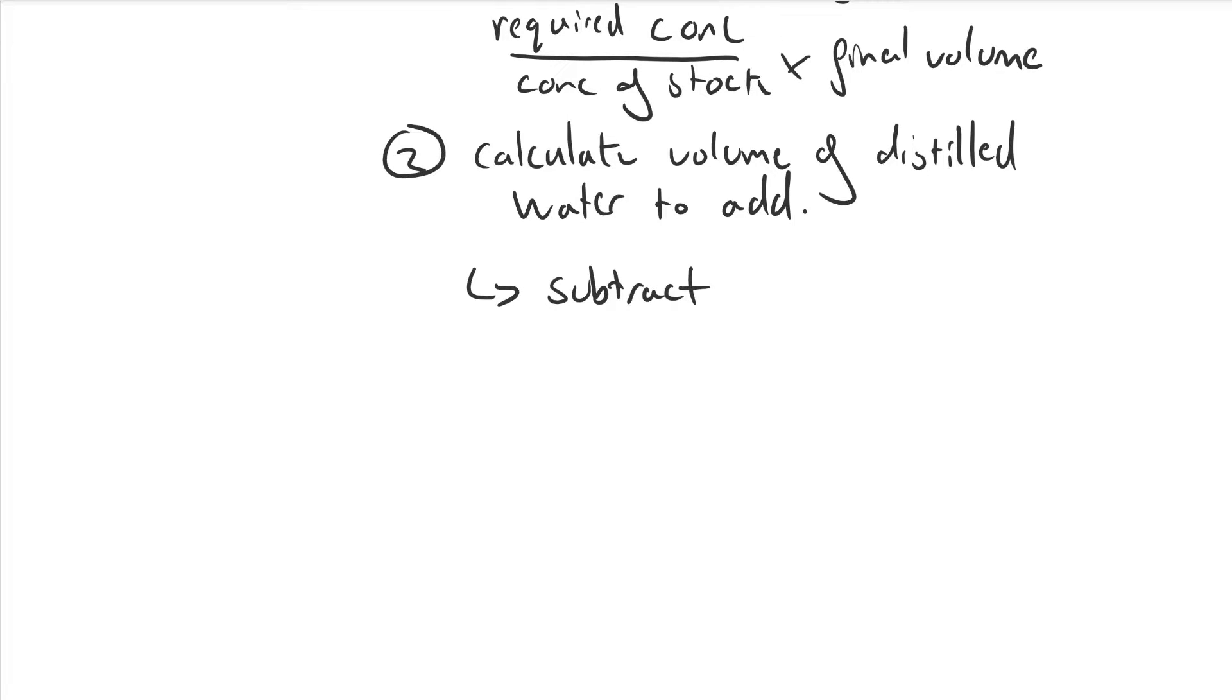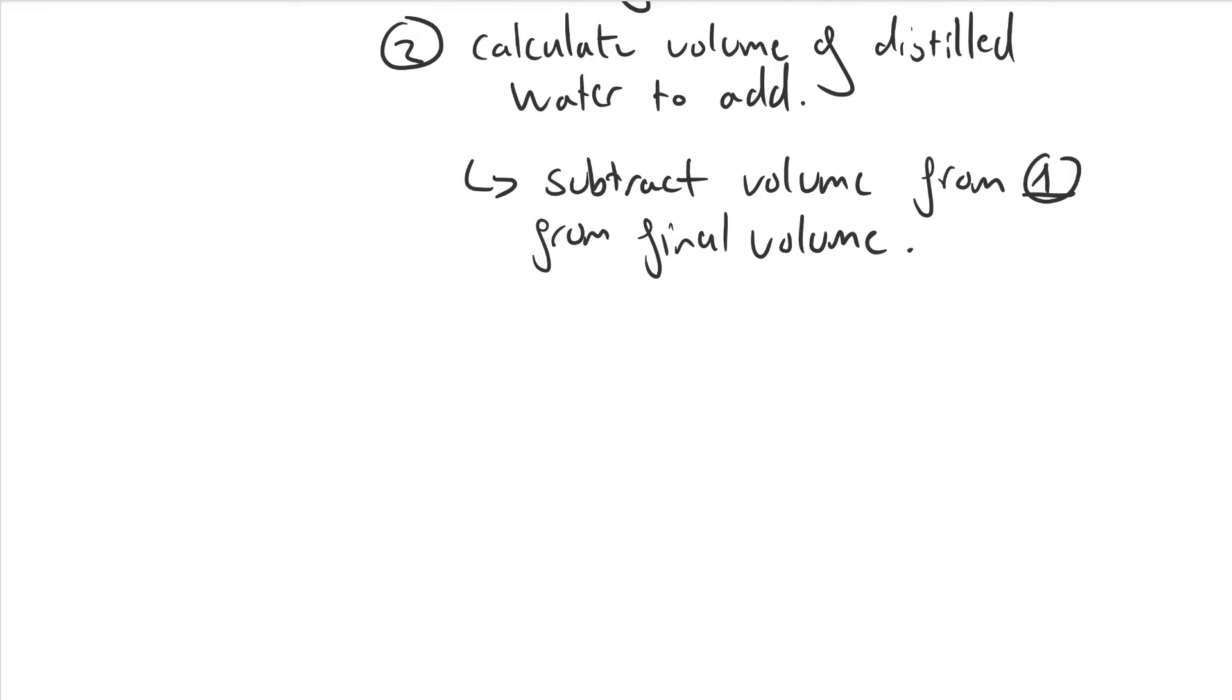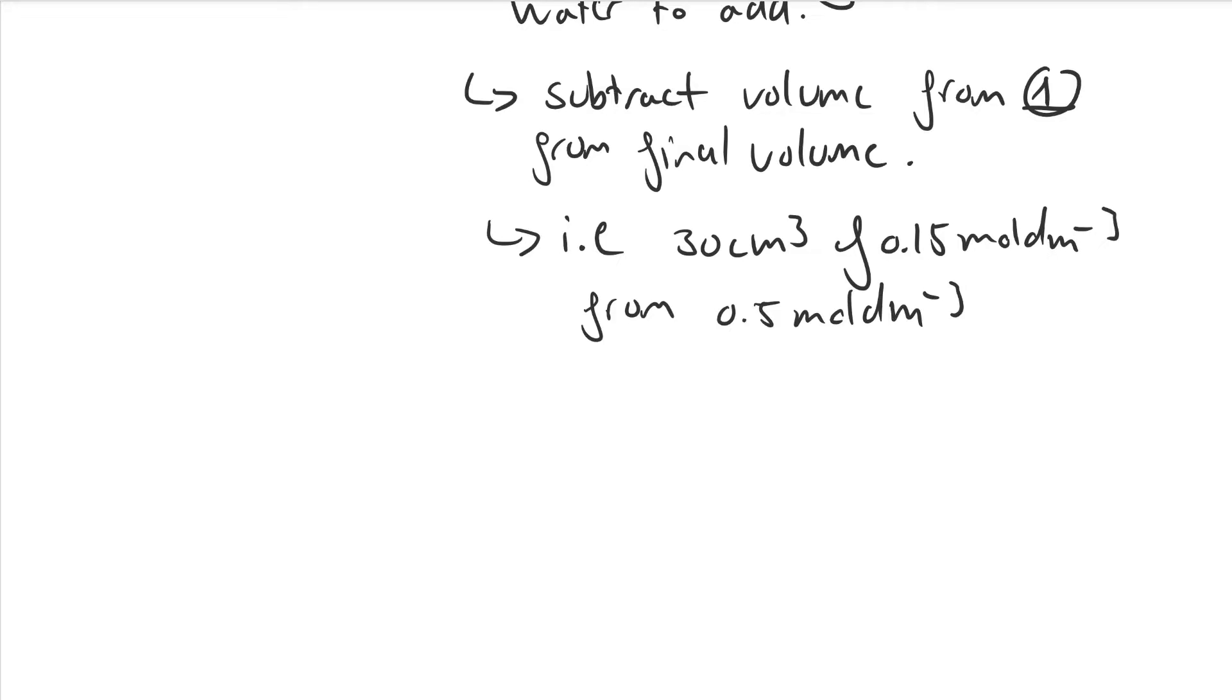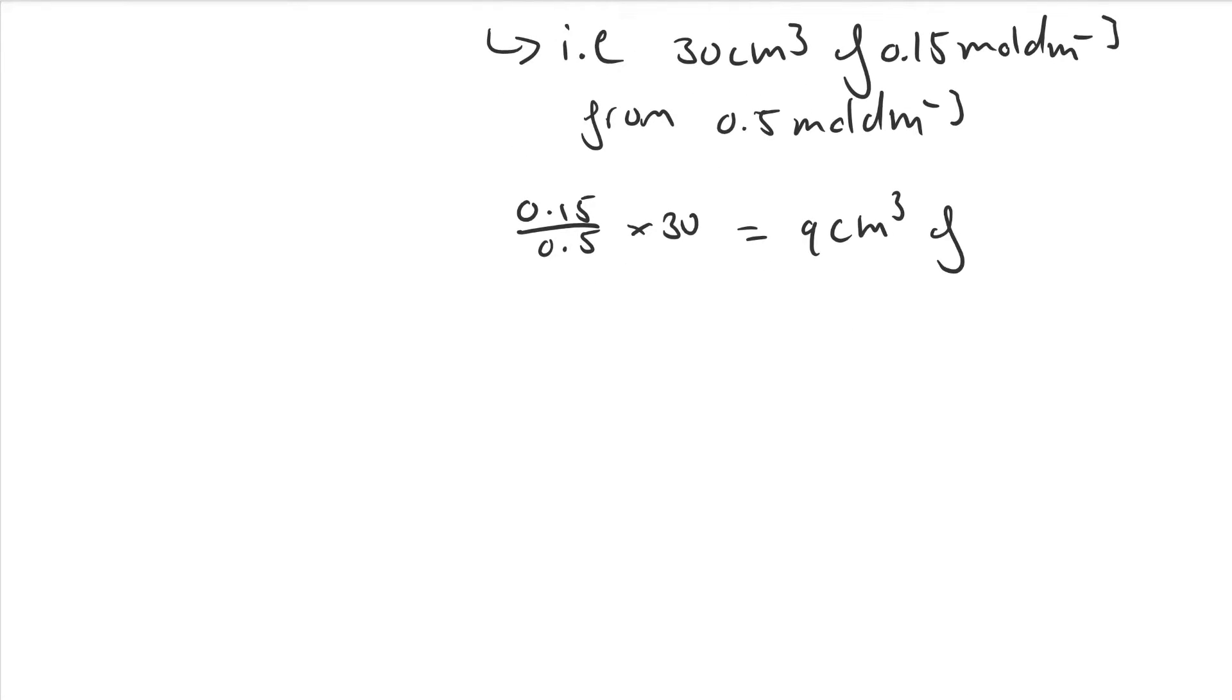For example, if you wanted to prepare 30cm³ of 0.15 molar sucrose solution from a stock solution of 0.5 molar sucrose, you would do 0.15 over 0.5 times 30. This equals 9cm³ of stock solution required. Then you do 30 minus 9, which equals 21cm³ of distilled water to add to get the 30cm³ of 0.15 molar solution.